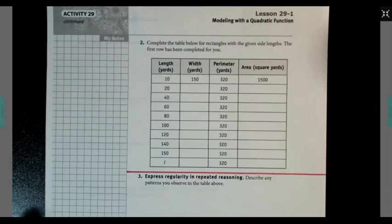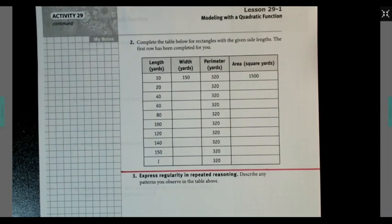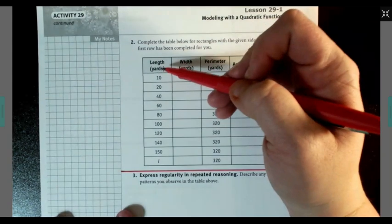Let's take a look at question two. Complete the table below for rectangles with the given side lengths. The first row has been completed for you. It says 10 yards for the length, 150 yards for the width, which makes the perimeter 320. The area is in square yards 1,500. Now let's talk about how we got these numbers or how they came up with these numbers. They gave us the length.